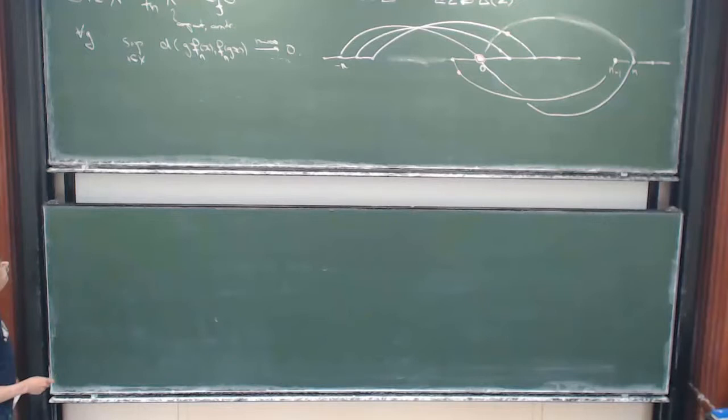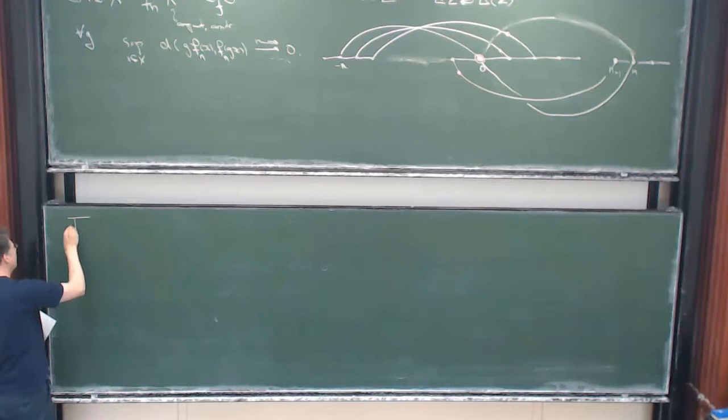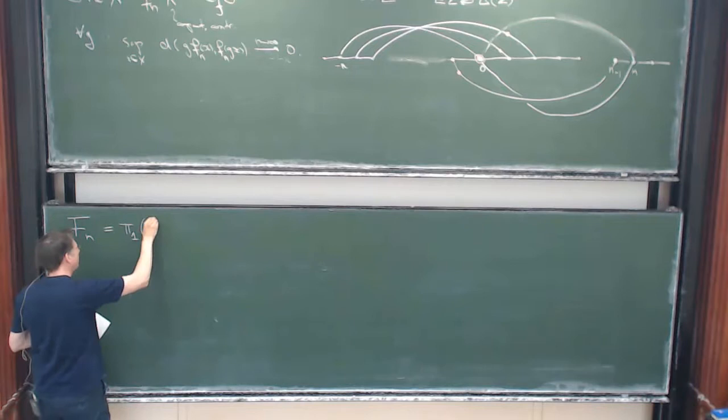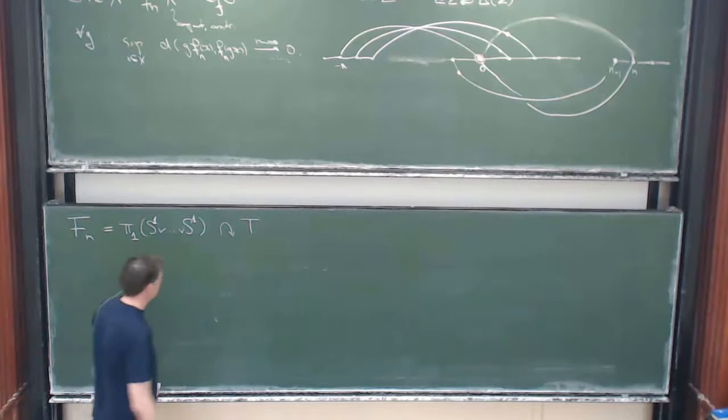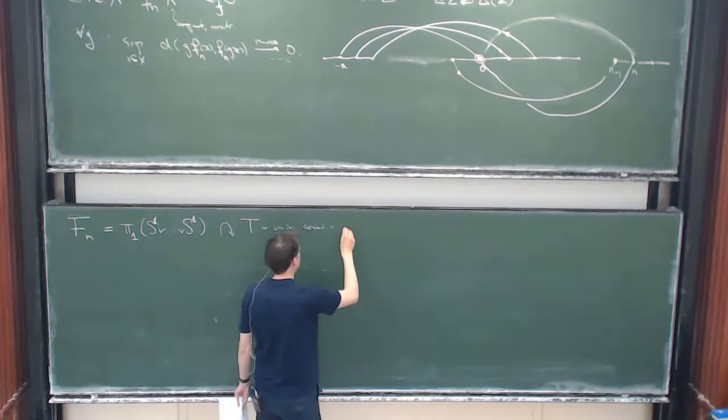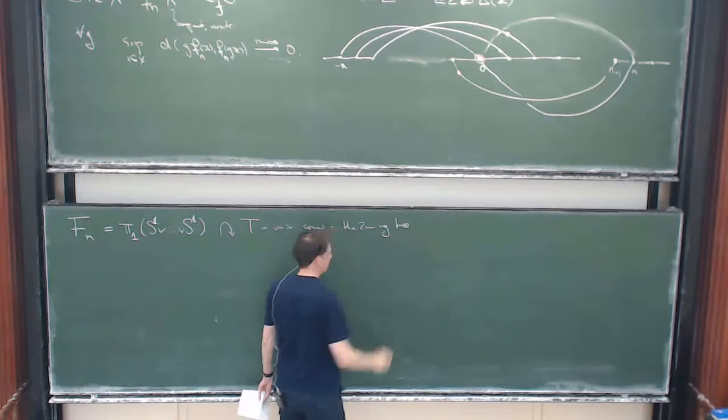I want to spend the rest of my time discussing the easiest example of this—the easiest I think—and that's the free group. So the free group is of course the fundamental group of a wedge of circles, and we immediately start to look at the action on its universal cover, which is the 2n-regular tree.